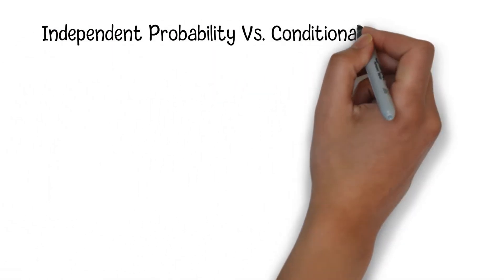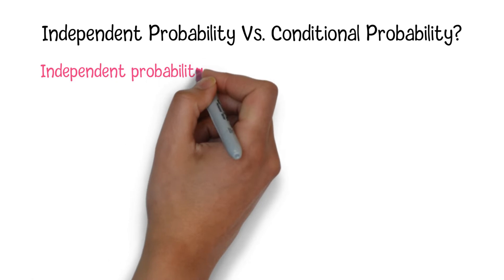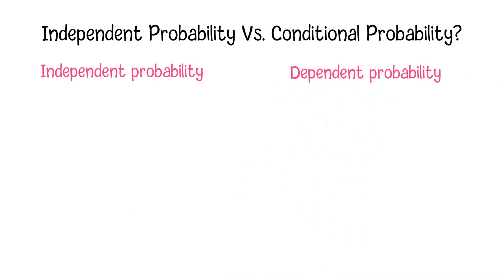What is Independent Probability and Conditional Probability? Regarding mathematical probability, there are two types, namely, Independent Probability and Dependent Probability.